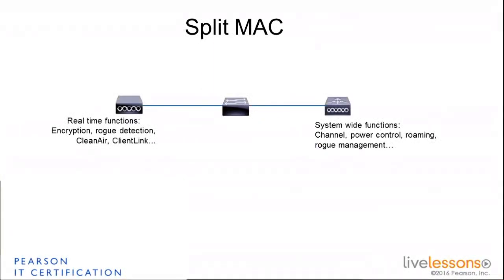In any case, if you use controllers, you're going to use a mode that we call Split MAC. That mode allows you to split the 802.11 MAC function between the access point on one side and the controller on the other side, where basically you're going to let the access point do whatever is real-time for 802.11, such as encryption, role detection, and some other functions. Then whatever needs to be centralized or requires more intelligence is going to be taken out of the access point and brought to that central point that the controller is going to be.